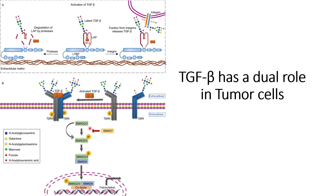This phosphorylation triggers the activation and phosphorylation of SMAD2 and SMAD3, which then form a heterodimeric complex with SMAD4. This complex enters the nucleus and promotes genes related to TGF-beta signaling — genes that, during the initial stage, are designed to prevent tumorigenic cell growth and promote apoptosis when the cell experiences tumorigenic symptoms.